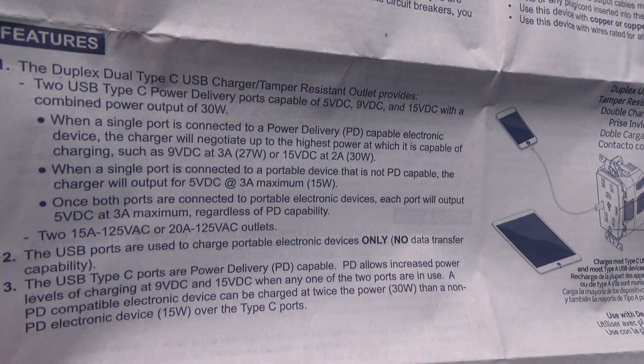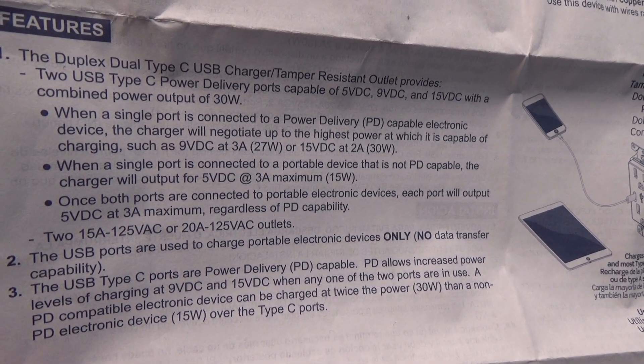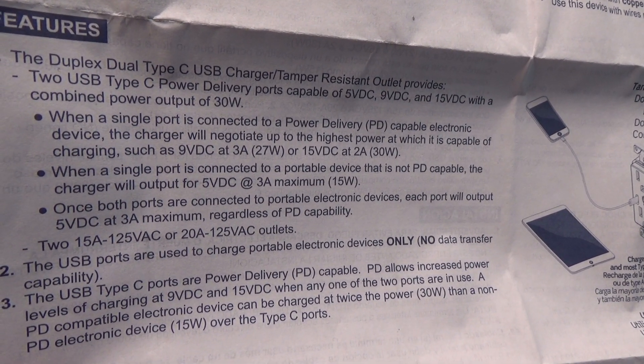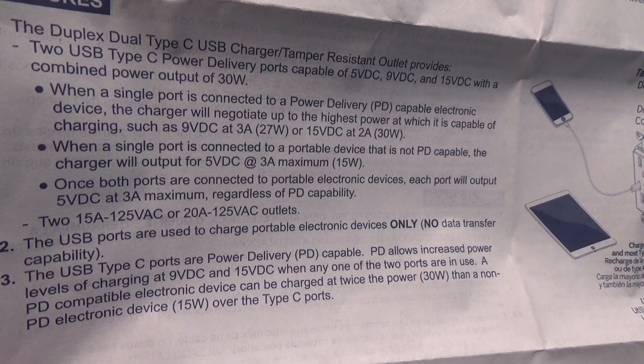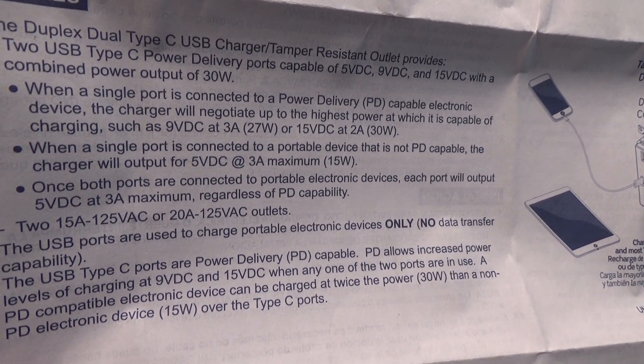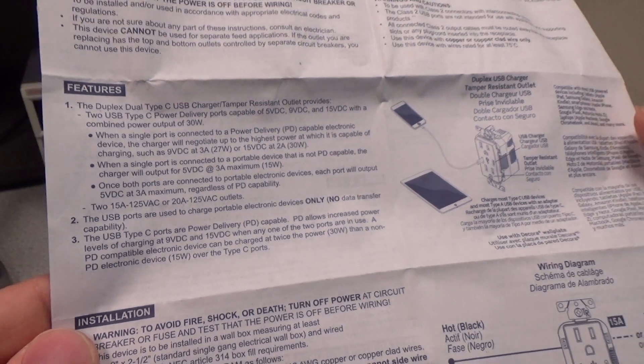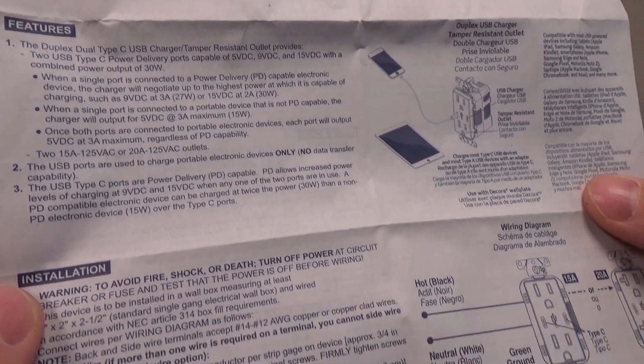once both ports are connected, each port will only output 5 volts at 3 amps, regardless of power delivery capability. That's something I did test and noticed that you only get 5 volts if you use both ports. And the reason for that is the 3 amp max at 5 volts is going to give you 15 watts. So you're still staying within the power capability of the device by staying at 15 watts.